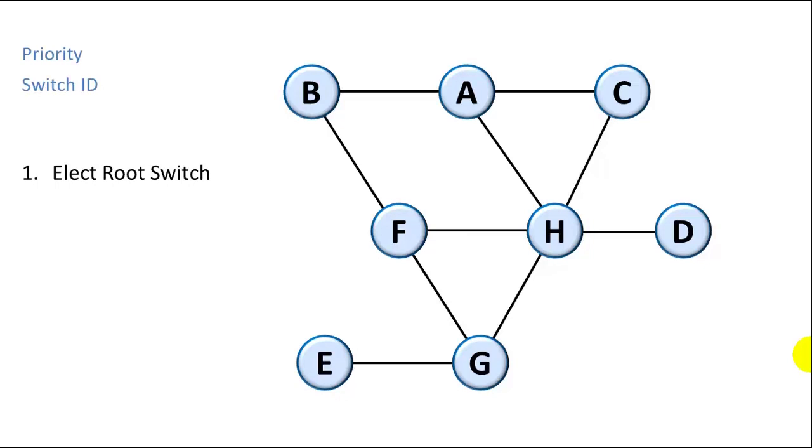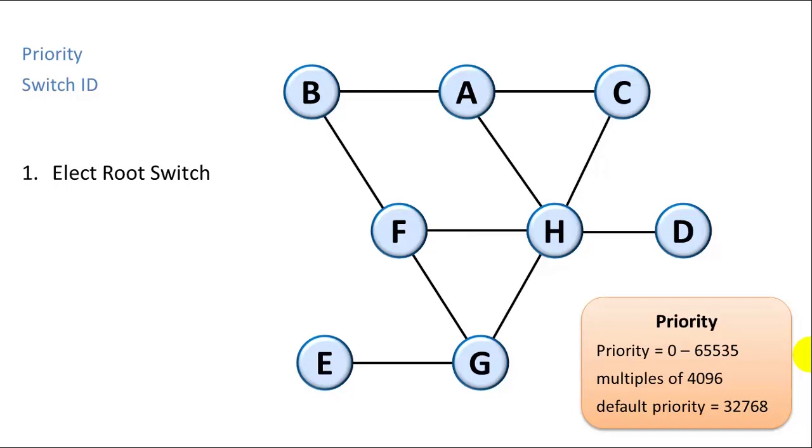It's selected first based on priority and then based on switch ID. The priority is a number from 0 to 65,000, and it comes in multiples of 4096. The Spanning Tree Protocol uses a default priority of 32768. So every switch will by default have that as a priority.